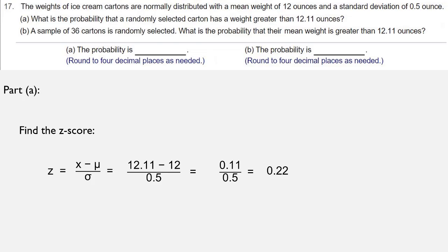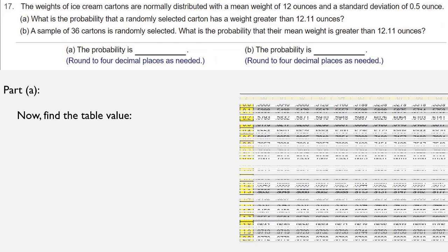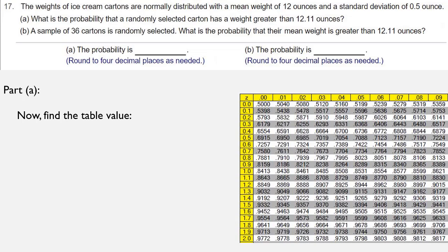Once we have our z-score, we're going to turn to the table of values. When z is equal to 0.22, we're looking at the positive side of the standard normal distribution table. We look for that table value for 0.22, and that value is going to be 0.5871.